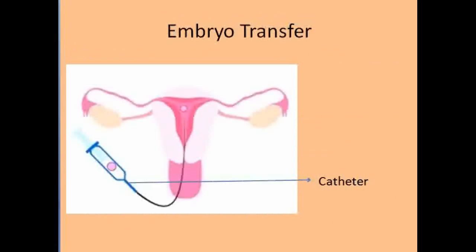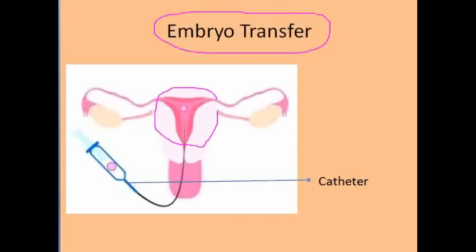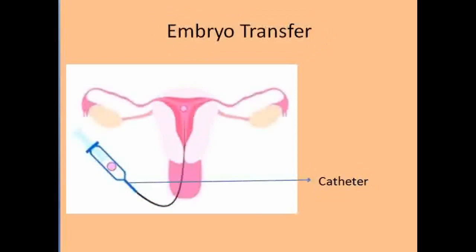This diagram explains the embryo transfer. The uterus portion is shown, and inside the uterus an instrument called a catheter is used. Inside the catheter is the fertilized egg, which is slowly guided through the catheter into the uterus, where the fertilized egg is released. In this way, fertilized embryos are transferred to the uterus of the lady.